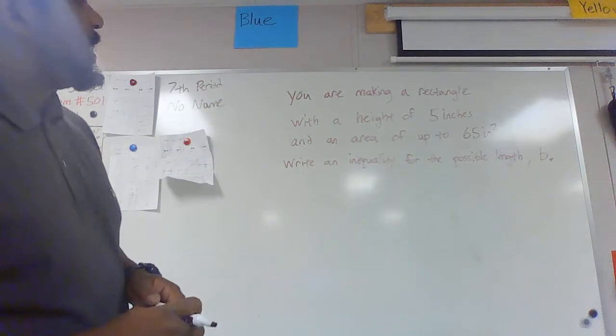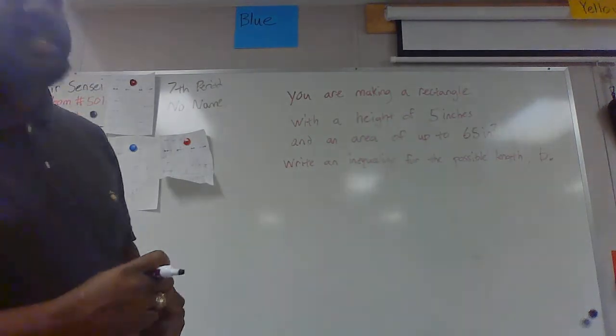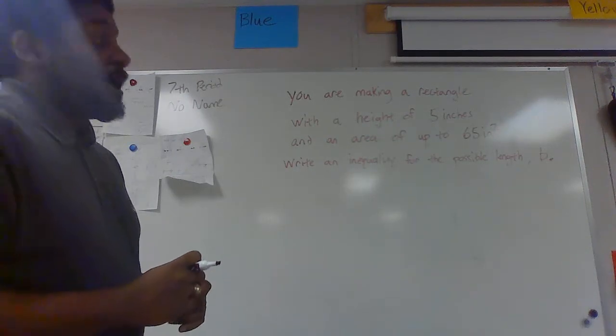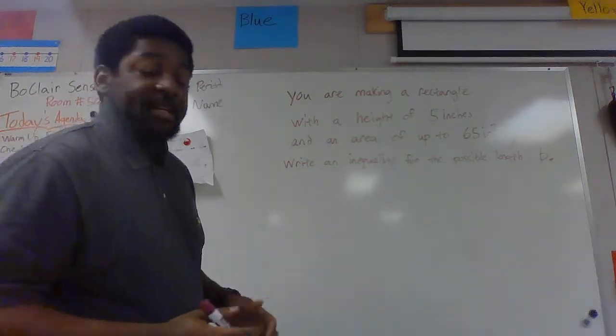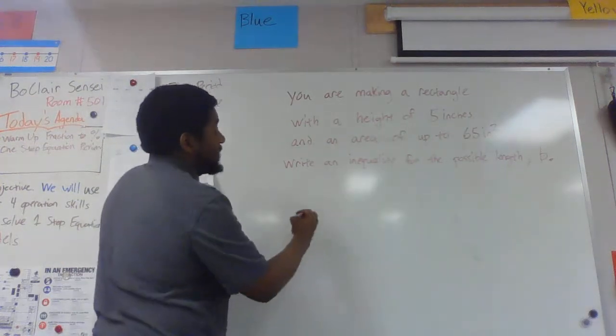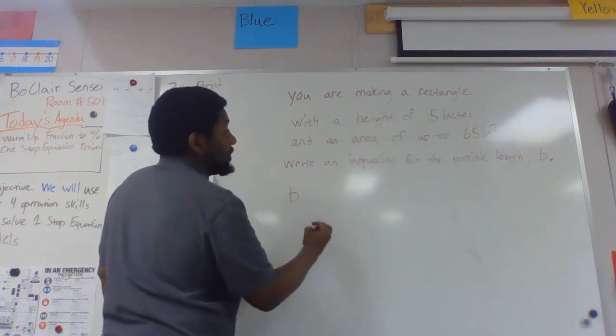It says you are making a rectangle with a height of 5 inches and an area of up to 65 inches squared. The first thing we need to know though is to find the area of a rectangle you actually take the base times the height. b times h is base times height.